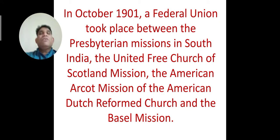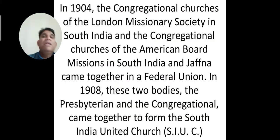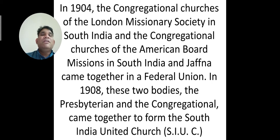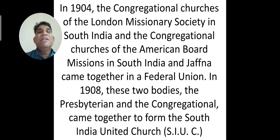In October 1901, a federal union took place between the Presbyterian missions in South India — the United Free Church of Scotland, the American Arcot Mission of the American Dutch Reformed Church, and the Basel Mission. In 1904, the Congregational churches of the London Missionary Society in South India and those of the American Board Missions in South India and Jaffna came together in a federal union. In 1908, these two bodies — the Presbyterian and the Congregational — came together to form the South India United Church (SIUC), which is still continuing in some parts of South India.